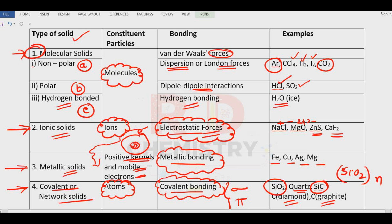In case of diamond, carbon is sp³ hybridized. In case of graphite, it is sp² hybridized. Quartz is the crystalline form of silicon dioxide.